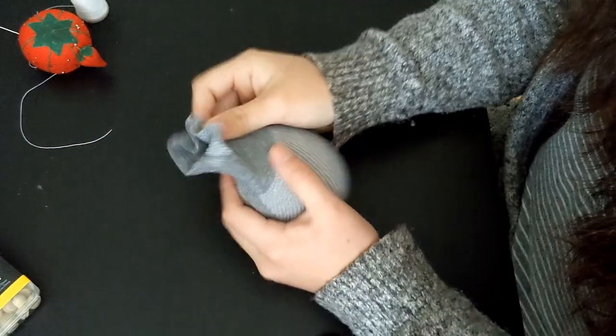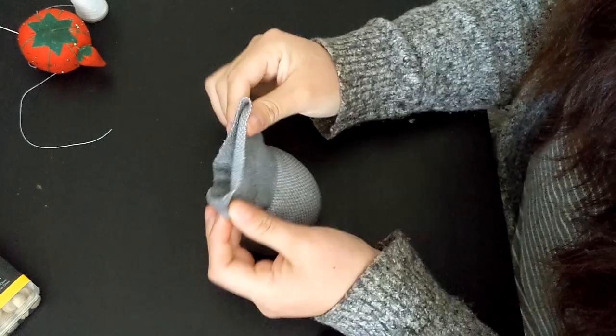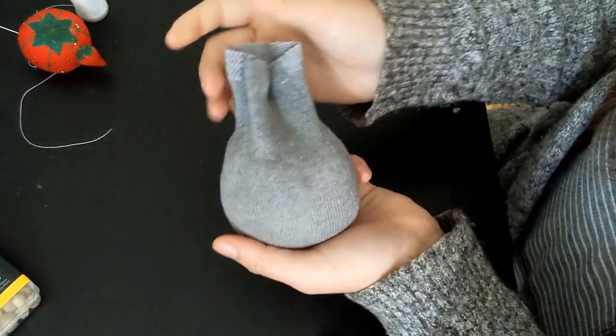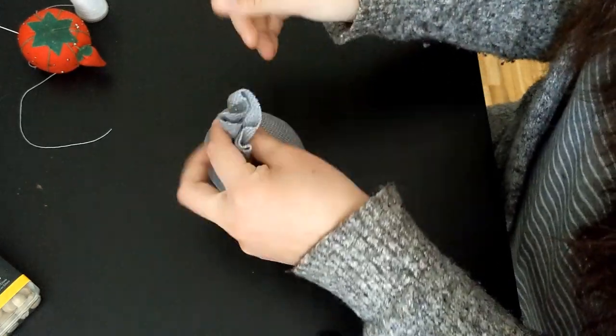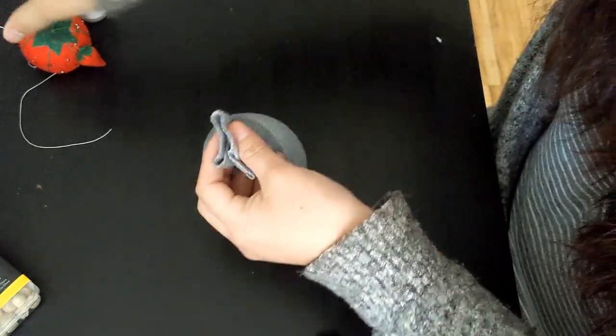All right, so I did put about a cup and a half of rice into my sock. And I cut off about two inches at the top.